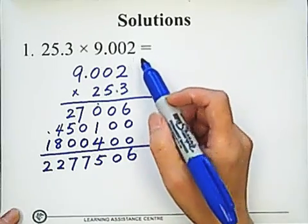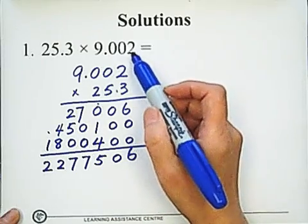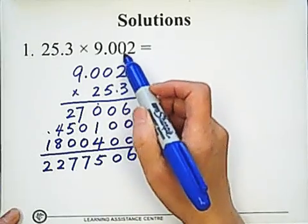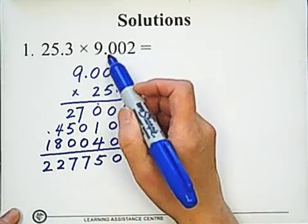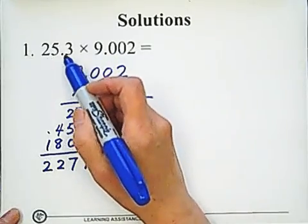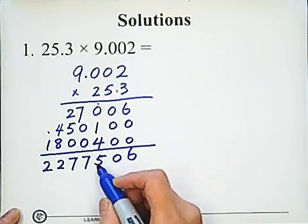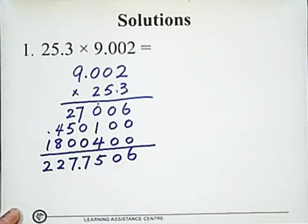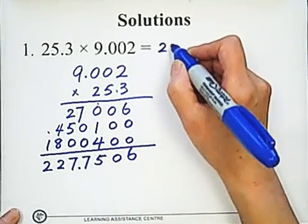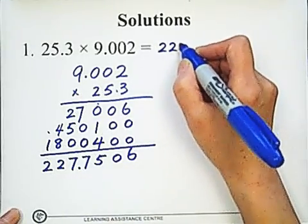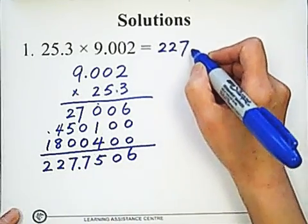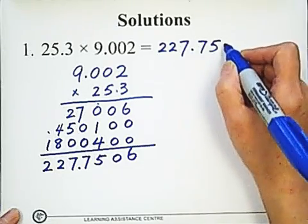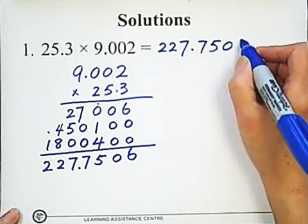The total decimal places in the product: 25.3 has 1 decimal place and 9.002 has 3 decimal places, totaling 4. Counting 1, 2, 3, 4 from the right, the answer is 227.7506.